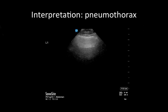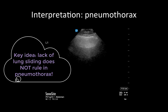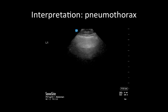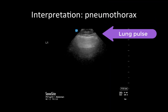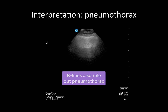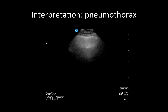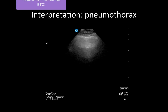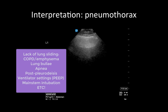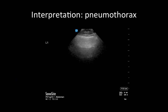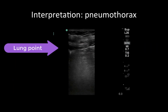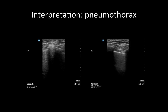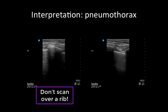It is worth noting that the absence of lung sliding does not necessarily rule in pneumothorax. There may be pulsatile movement of the lung pleura that corresponds with cardiac activity — this is a lung pulse and also rules out pneumothorax. The presence of B-lines also effectively rules out pneumothorax. The absence of lung sliding should always be interpreted in clinical context, as other factors such as COPD or emphysema, decreased respiratory effort, or high ventilator settings can also lead to its loss. The only finding which definitively rules in pneumothorax is the presence of a lung point. Finally, when searching for lung sliding, make sure you're not scanning over a rib, as ribs create a bright hyperechoic line with no movement, which can be misinterpreted as a loss of lung sliding.